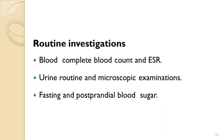Routine blood investigations must be done as baseline investigations in infertility, as infective conditions may also present in the genital area. Urine routine and microscopic examination must be done. For diagnosis of retrograde ejaculation, post-coital urine examination must be performed. The presence of spermatozoa in urine is suggestive of retrograde ejaculation, especially in patients who are having prostatic complaints.